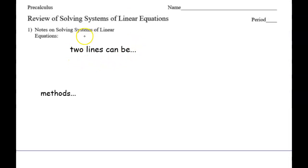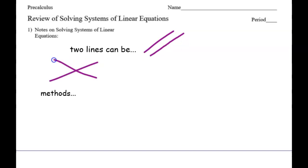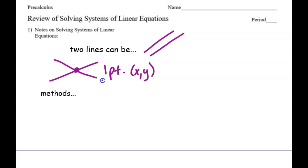We're going to talk about when we have two lines, what could happen. Two lines could be parallel and never intersect. Most of the time they intersect somehow. So if you have two lines that intersect, you are going to be looking for this point of intersection, and you're going to end up with an XY ordered pair. This is called a consistent system.